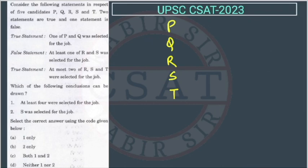One of P and Q was selected for the job. So, out of P and Q, only one will be selected. Now, first we are reading the true statement only.